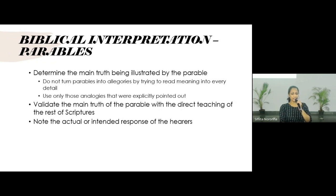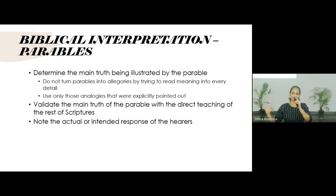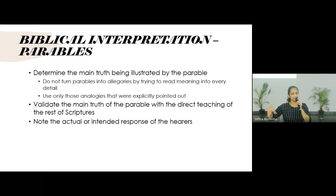Then we always look at the rest of scripture. Is whatever I've understood here from this parable in line with what scripture teaches? Like we said, even with type and antitype, we don't base doctrine on what we've seen in a type and antitype alone. We also have to check the rest of scripture and see what is clearly taught. Is our understanding of this truth in line with the truth of the rest of scripture?